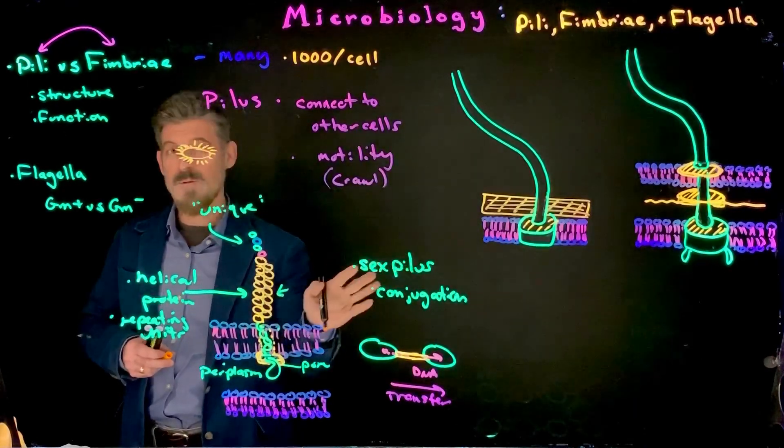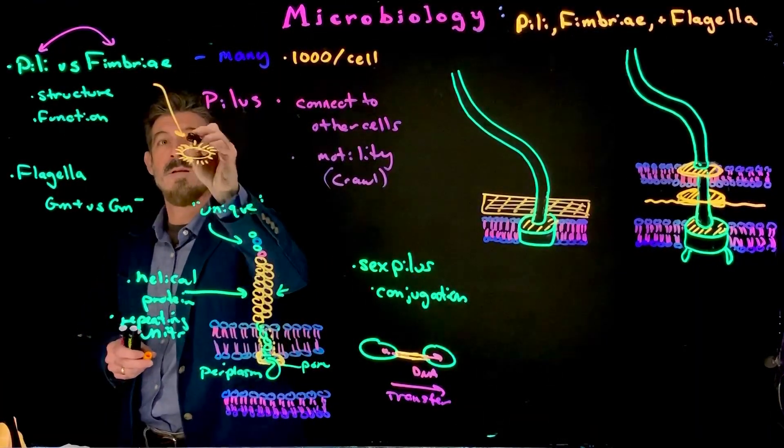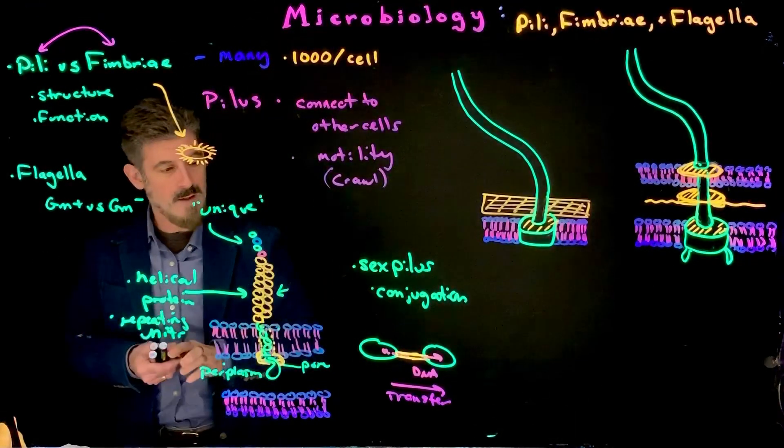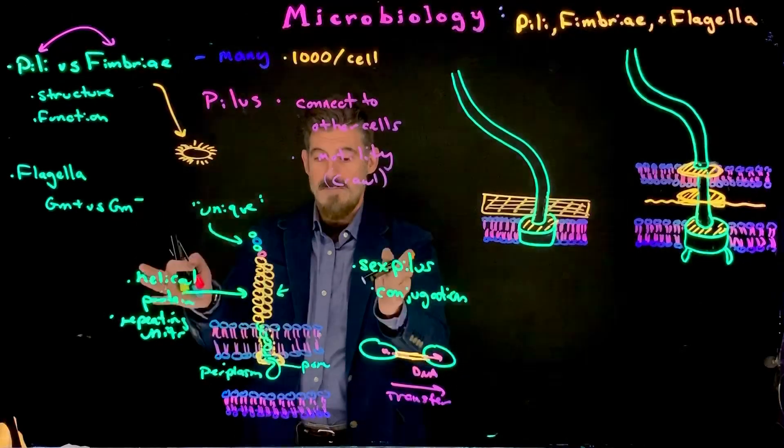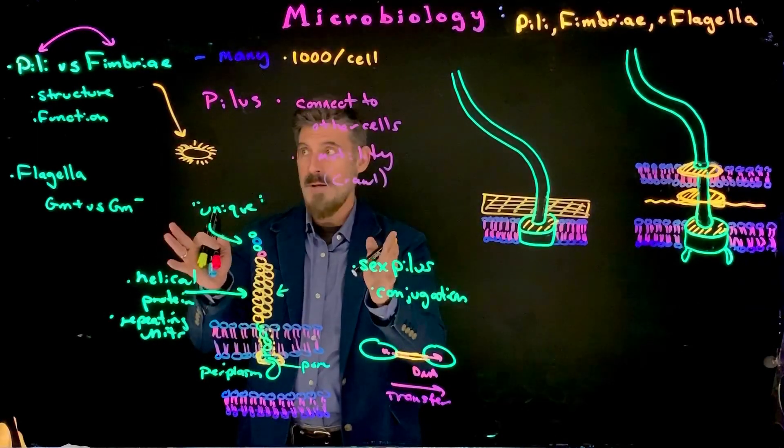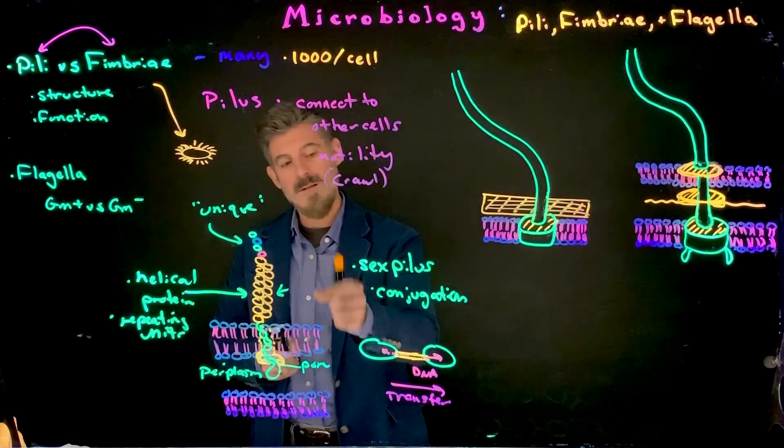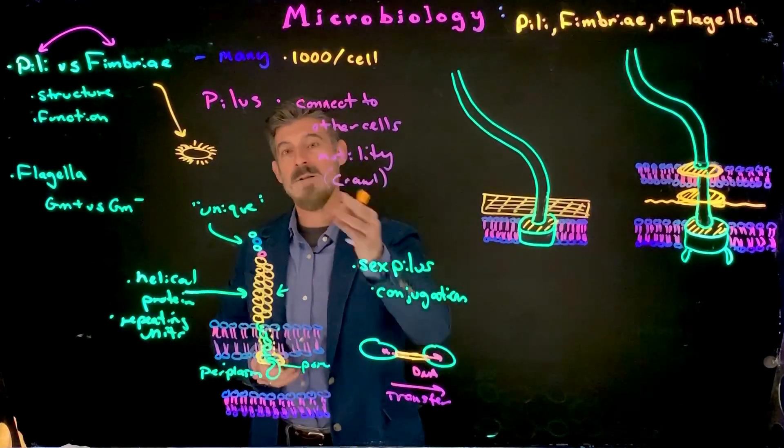Now, these are different than the flagella, which we're going to talk about in a second. These would be the fimbriae that are attaching to other cells. So kind of keep that separate as one topic. Fimbriae, pili, mostly attachment can be attachment from bacteria to bacteria, like this. It could be bacteria to other cells.